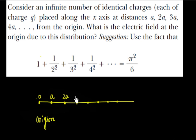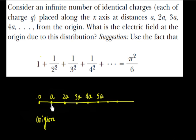And x equals to 3a, this is x equals to 4a, similarly 5a. The question says: what is the electric field at the origin due to this charge distribution? These are all positive charges — this is q, this is q, this is again q — so we have q charges arranged at a distance of a.